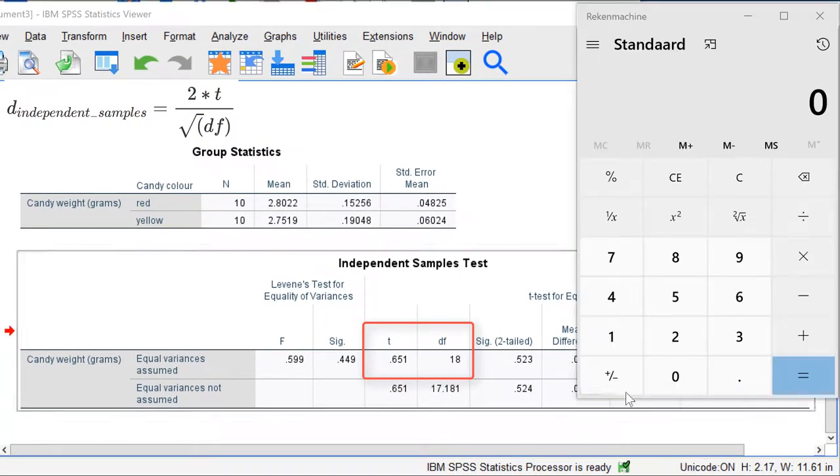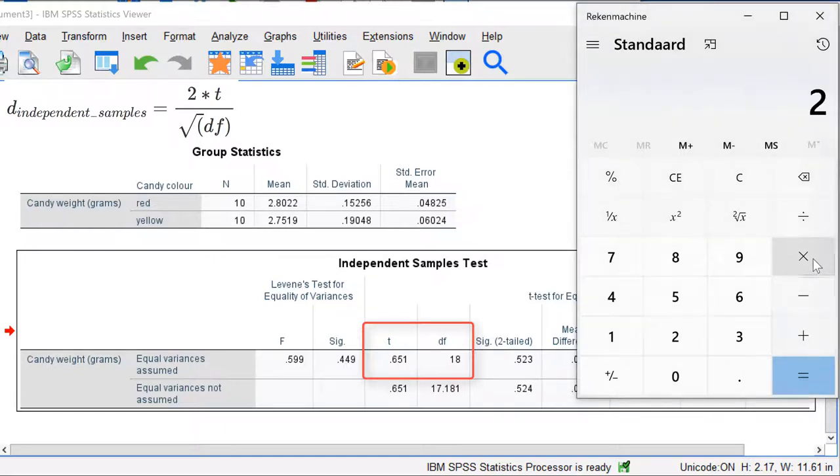We must take 2 times the t-value, which is 0.651 here. We divide by the degrees of freedom, which is 18 here, but we must first take the square root, which is around 4.2. The result is 0.31.